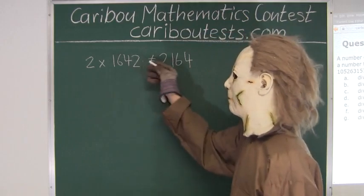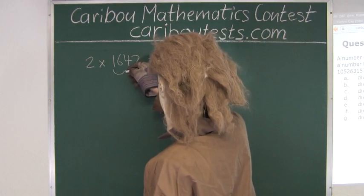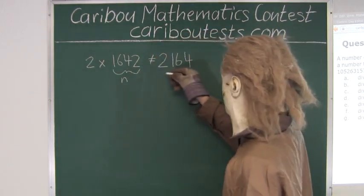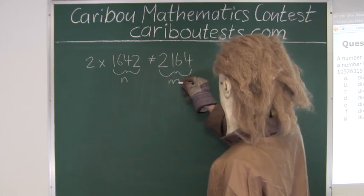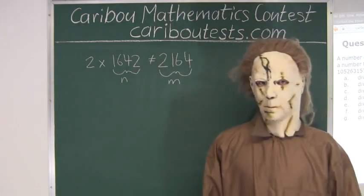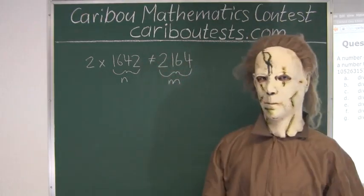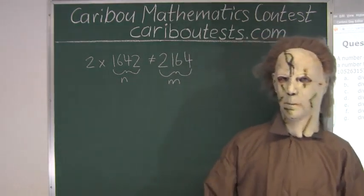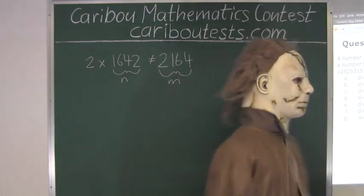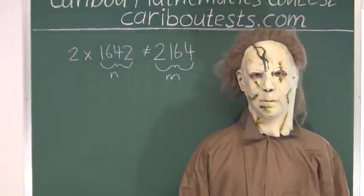So let's call this number n and this number m. Right now we have 1 relation for 2 unknowns. But if we just do trial and error, that would almost be impossible to find because the number is so large. So we need to use more information from the question.